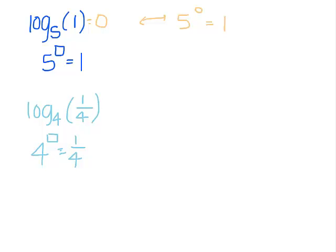That means that the exponent was negative. So if I compare this 4 here and this 4, they're the same. That means that the exponent here is a 1. So if you want to change 4 to 1 fourth by using an exponent, that exponent is going to be negative 1. Because 4 to the negative first is 1 fourth.